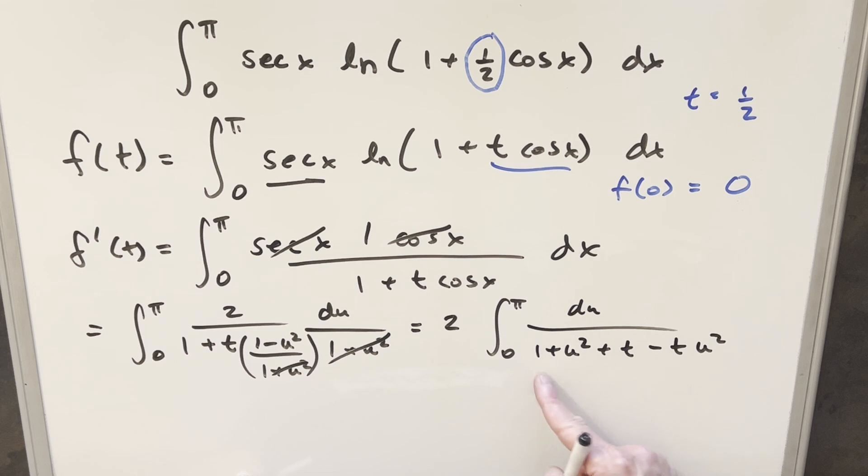But then let me rearrange everything, bringing the constants together. So we're going to have a one plus t over here as a constant value. And then over here, this is going to become a plus one minus t u squared. Let's take this one minus t and factor it out front of the integral. So I can write it over here like one minus t. What's going to happen is this is going to become a one minus t over here, and this is going away.